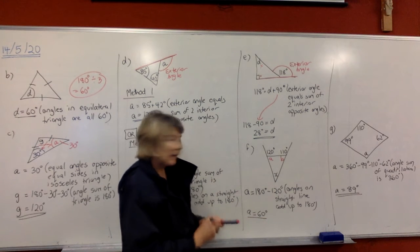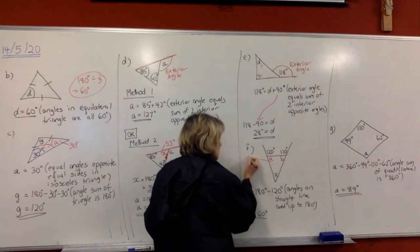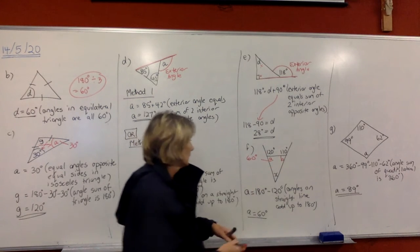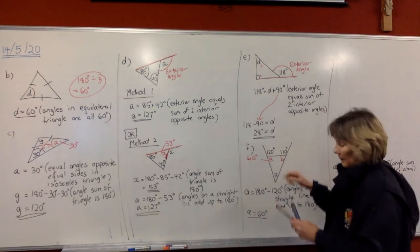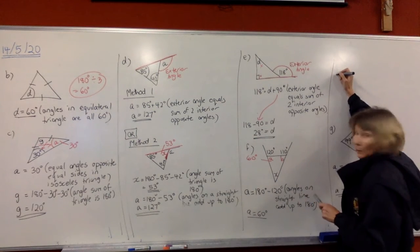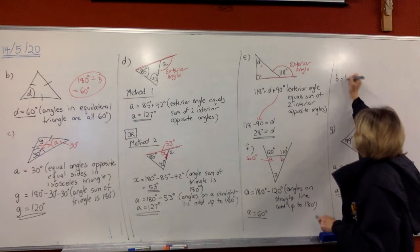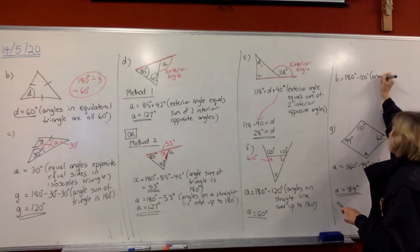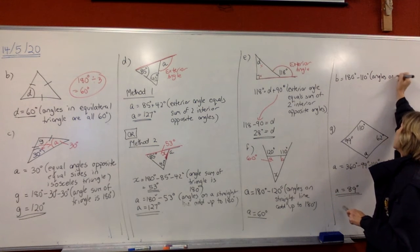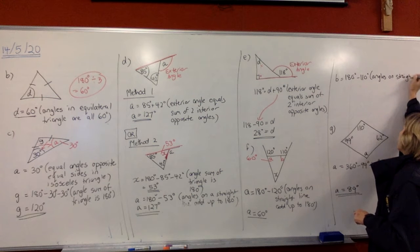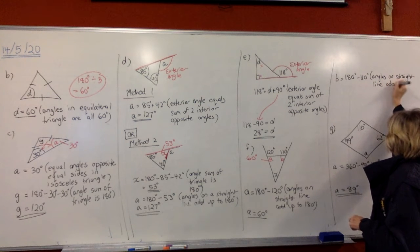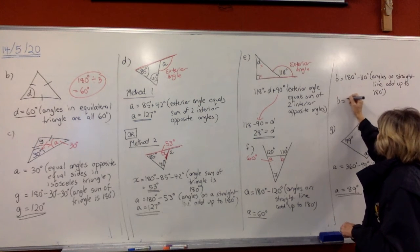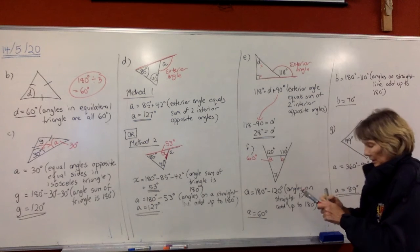Write in that it's 60 degrees. Now find B the same way — these two angles are on a straight line and add up to 180 degrees, so B equals 180 minus 110, because angles on a straight line add up to 180 degrees. That gives us 70 degrees. Write it in.